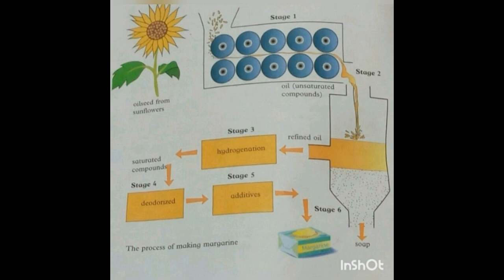After the seeds are crushed and squeezed, the oil is transferred to the next chamber where refining takes place. In stage two, the oil is refined by heating with sodium hydroxide (NaOH). The impurities in the oil react to form a soap-like substance, and the purified oil is then separated and washed.